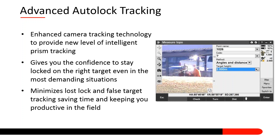The advanced auto-lock tracking is a really neat feature. It tracks a passive prism, but you have the confidence of knowing the instrument is always locked on you. As you can see on the right-hand side, there's a split screen — your vision technology is always on should you choose — and you can see the instrument locked on your prism at all times. This minimizes lost locks and false targets, saving tracking time and keeping you very productive in the field.